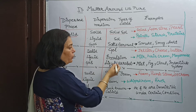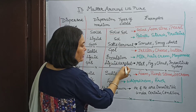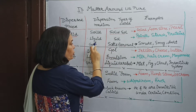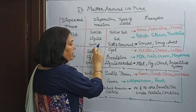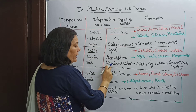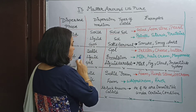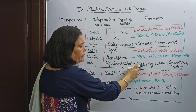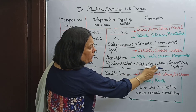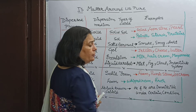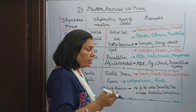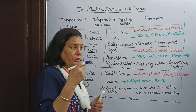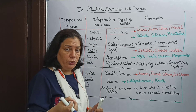When liquid dissolves in gas, it is called liquid aerosol. Examples are mist, fog, clouds, and insecticide sprays — sprays used to kill insects.